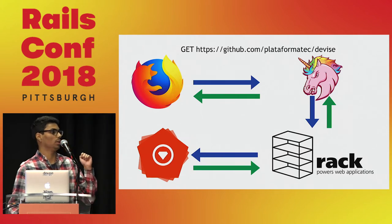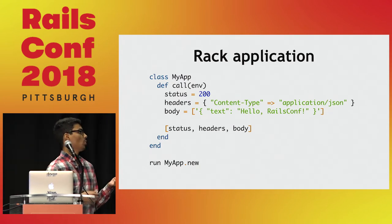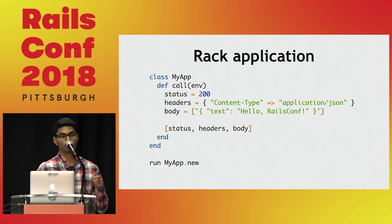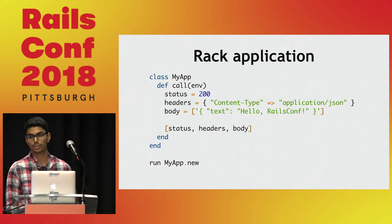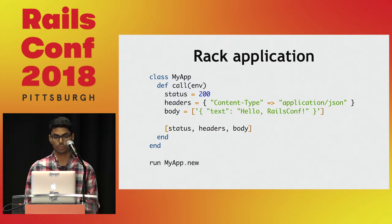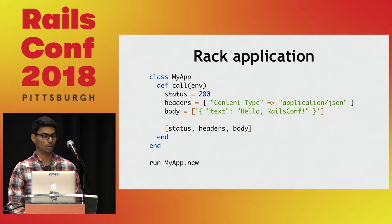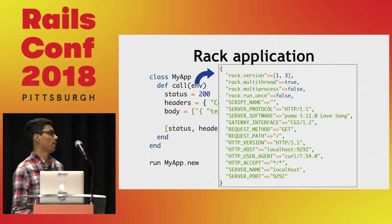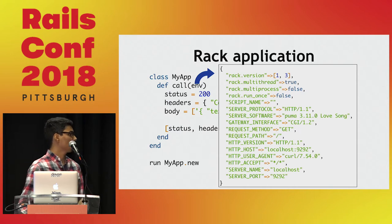It's pretty easy to implement a Rack API. We just create a class that responds to a method named call. This method receives one argument and has to return an array with three items: the response status, the response headers, and the response body. This argument is what we call the request environment hash — a hash that contains all the information related to the current request, like server protocol, request method, request path, server port, and so on.